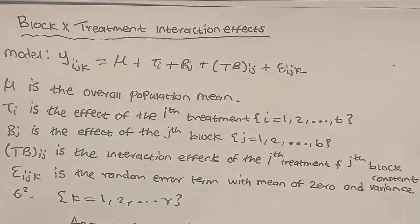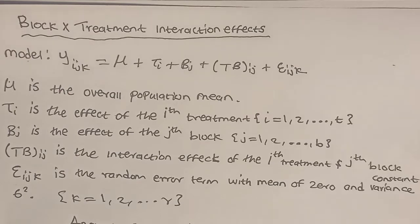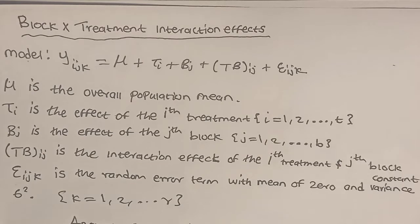The block-cross-treatment interaction effect: the main aim is to check if the treatment and blocks interact. The model is given by yijk equals mu plus tau_i plus b_j plus tau_b_ij plus e_ijk, where mu is the overall population mean, tau_i is the effect of the i-th treatment (i ranges from 1 to t), b_j is the effect of the j-th block (j ranges from 1 to b), tau_b_ij is the interaction effect of the i-th treatment and j-th block, and e_ijk is the random error term, normally distributed with a mean of zero and constant variance.